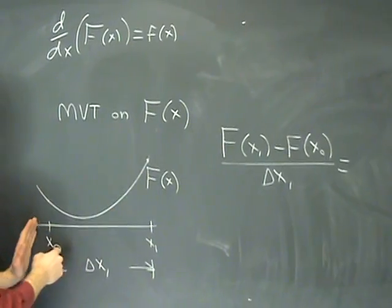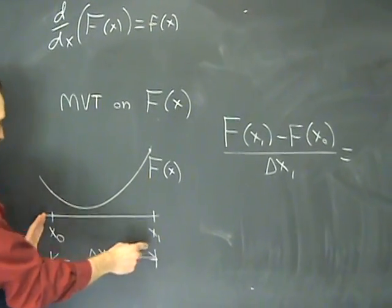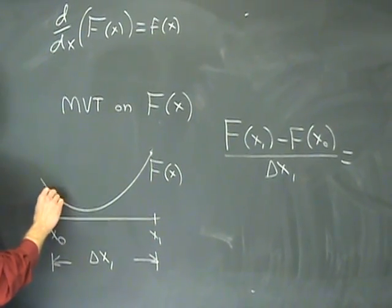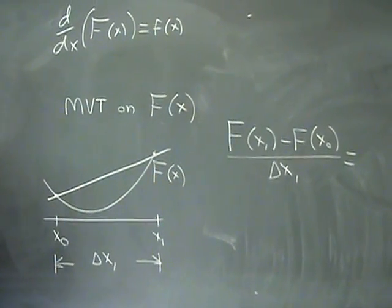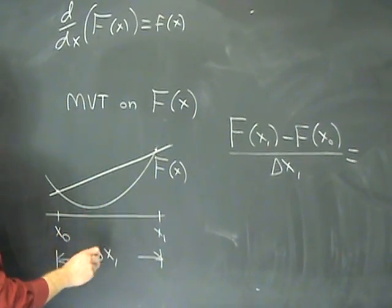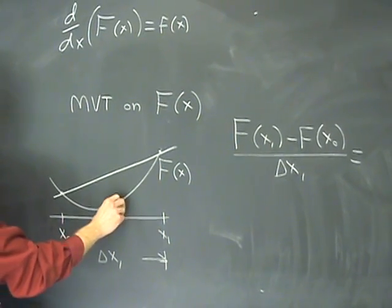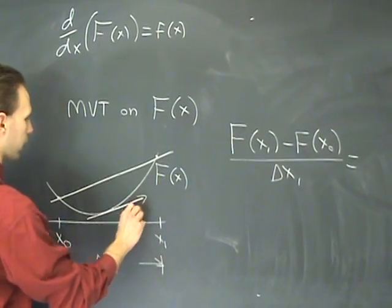If you have big F of x on some interval, the mean value theorem says that the slope of the line that joins the two endpoints of an interval is going to be equal somewhere to the slope of the tangent line inside, at least one time.